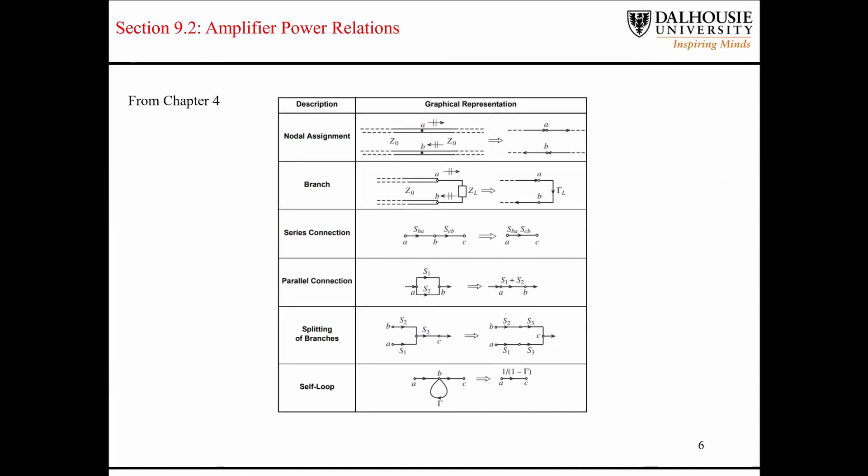This is a table from Chapter 4. It shows various simplifications that can be made to signal flow diagrams. You can see here that if you have a signal that's being multiplied by the branch S sub BA, and then the output of that, so here you would have B equals A times S sub BA, and then at this point here, C would be B times S sub CB. Then you can simplify this and you can say that C is going to be A sub BA times S sub CB. There are various simplifications that can be made to simplify signal flow diagrams like the one that was shown previously.